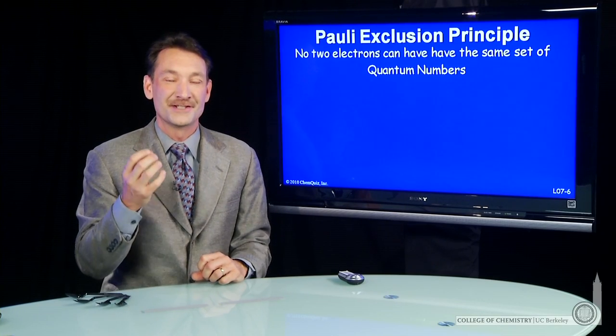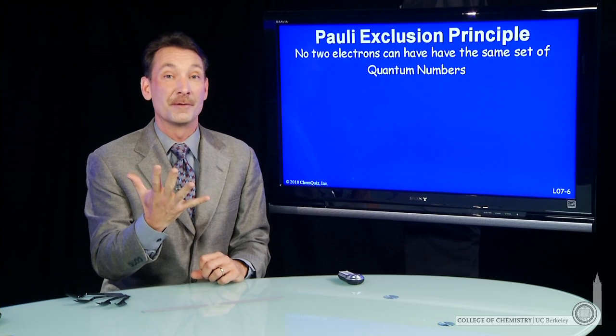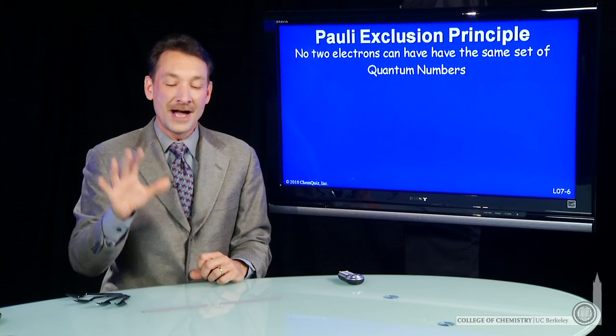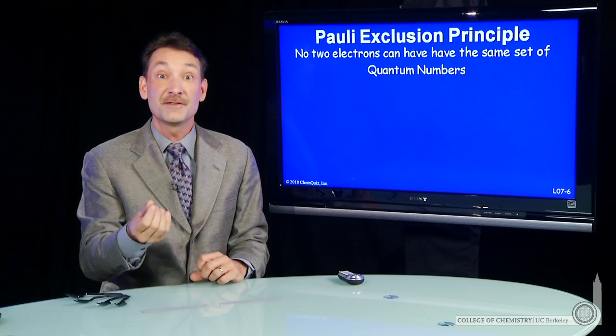When more than one electron is around an atom, those electrons have a set of four quantum numbers. And they'll occupy the available orbitals around an atom, but they'll do it in very specific ways. They'll follow very specific rules.